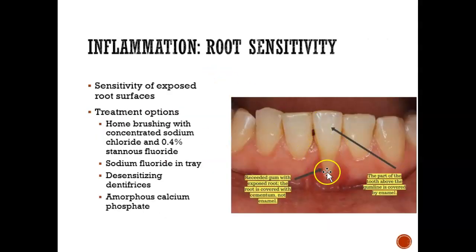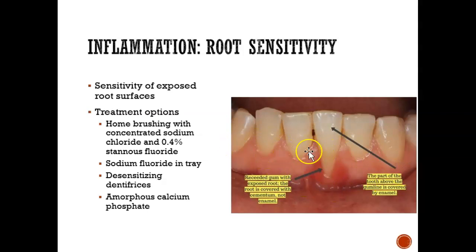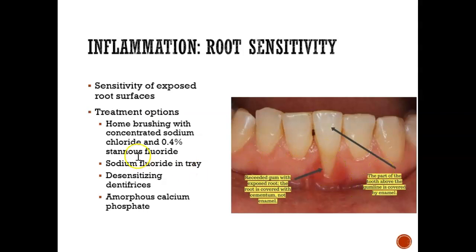When you have recession and your gums go down, that exposed area becomes very sensitive. People who have generalized gum recession will experience sensitivity or sensitive teeth. To treat this, one way is to give them fluoride, because fluoride doesn't only help with cavities — it also helps with sensitivity. Sometimes we'll give them a tray to put fluoride in. There are also toothpastes that can help, like Sensodyne.